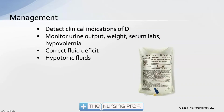Management involves detecting the underlying clinical condition and monitoring urine output, weight, and serum labs — monitoring INOs, correcting fluid deficits with hypotonic fluids. One such fluid is D5W, which is hypotonic even though it's isotonic in the bag. Once injected and the dextrose metabolizes, it becomes water, and water is hypotonic.